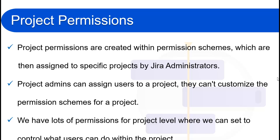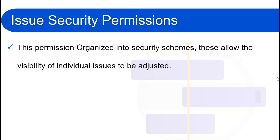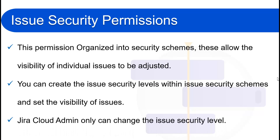The third type is issue security permissions. As the name suggests, these permissions help us set the security for an issue. This permission is organized into security schemes, which allow the visibility of individual issues to be adjusted. You can create issue security levels within issue security schemes and set the visibility of each issue. Only the Jira Cloud admin can change the issue security level.